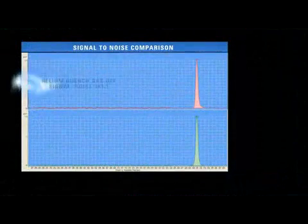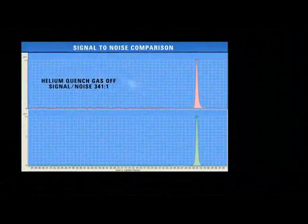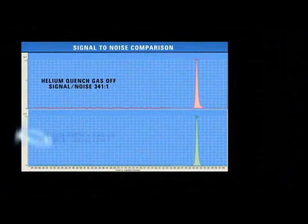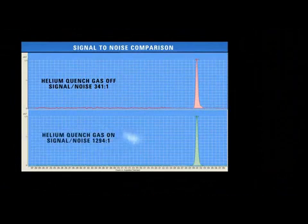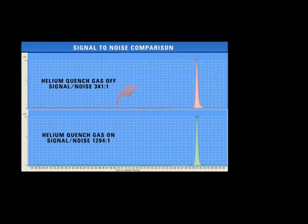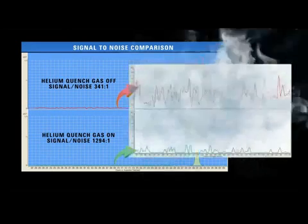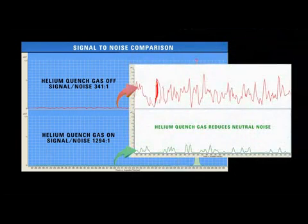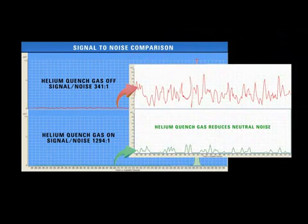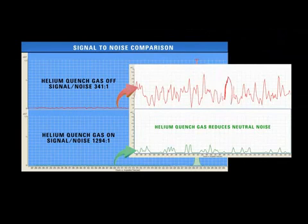A comparison of signal-to-noise ratio with and without helium quenching shows the benefit of this technology. Helium quenching has no effect on product ion signal, but the neutral noise component is reduced by a factor of four. This technical breakthrough means lower limits of detection and quantitation.